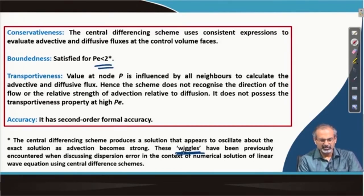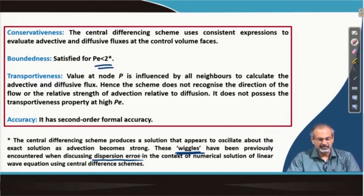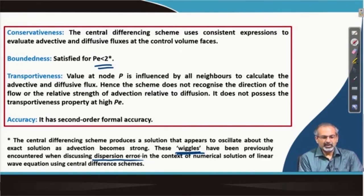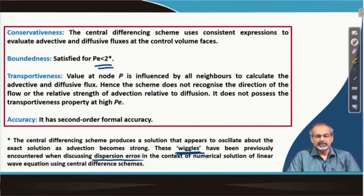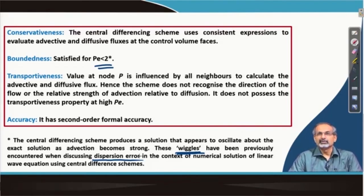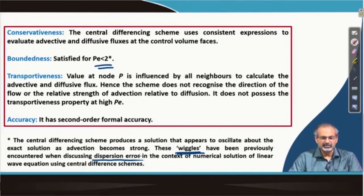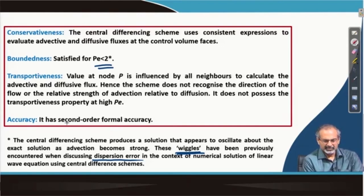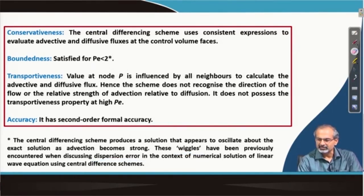Wiggles with central differencing were also seen in the context of the wave equation. As far as transportiveness is concerned, when calculating values at cell interfaces we put equal weightage on neighboring nodes, meaning we are not paying attention to the direction of transportation. This is essentially why the solution becomes unbounded beyond a certain Peclet number range. The scheme has second order formal accuracy, as discussed previously. These are the characteristics of the central differencing scheme.